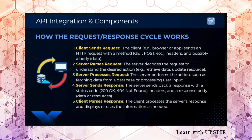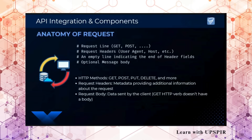For example, if a mobile app had to show weather information on the screen, it will get the data from the weather API and show it on the screen. Now we will take a look at the anatomy of a request. A request has basically four major parts. The first is the request line, which specifies which kind of HTTP method we are going to use.